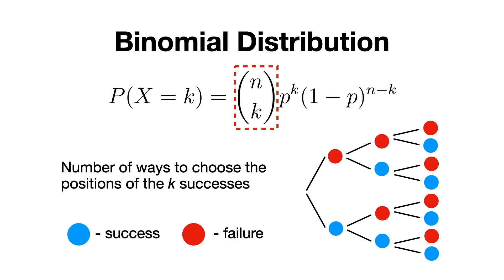There are combinations of n taken k such sequences, since the binomial coefficient counts the number of ways to choose the positions of the k successes among the n trials.